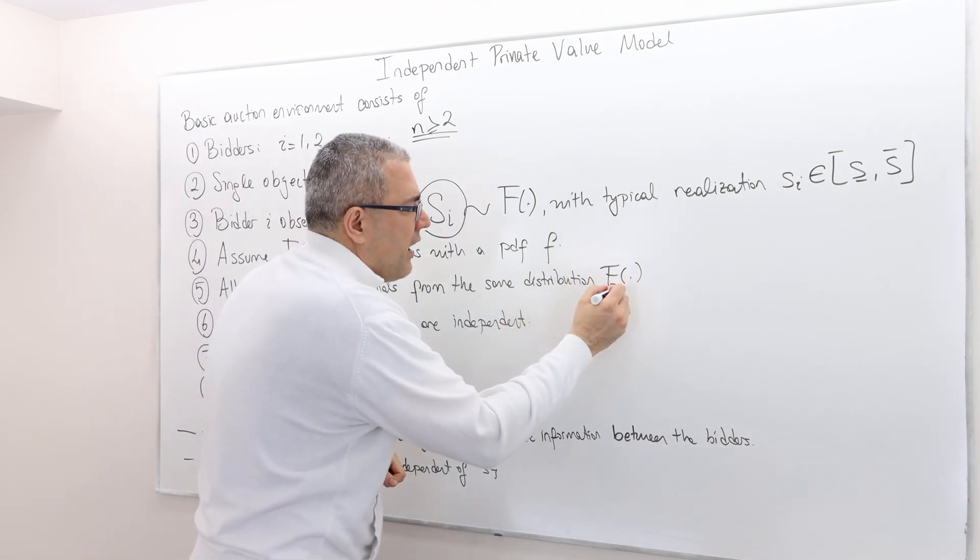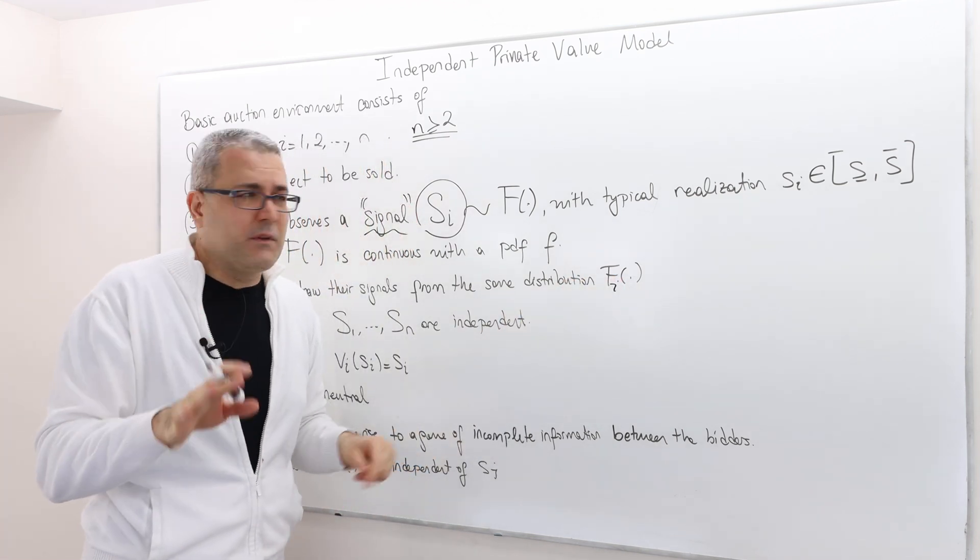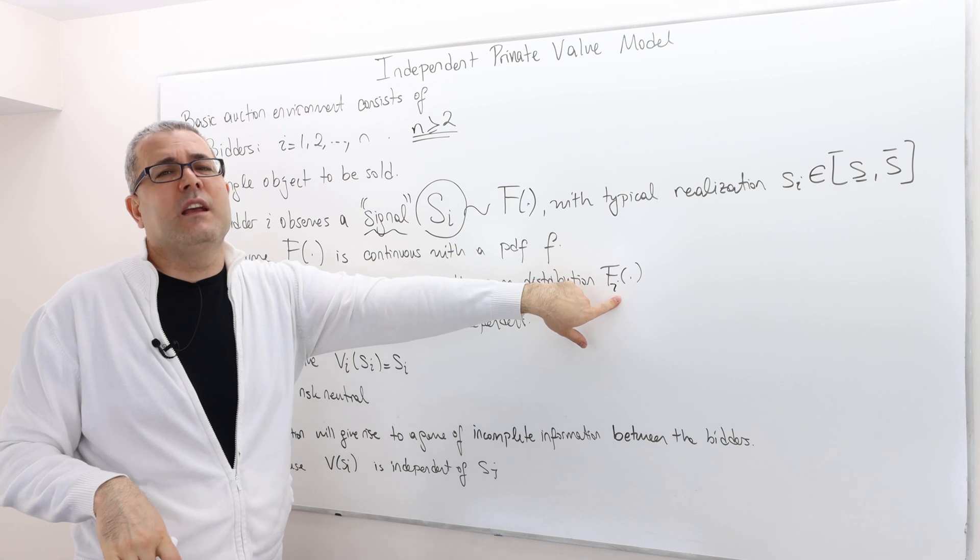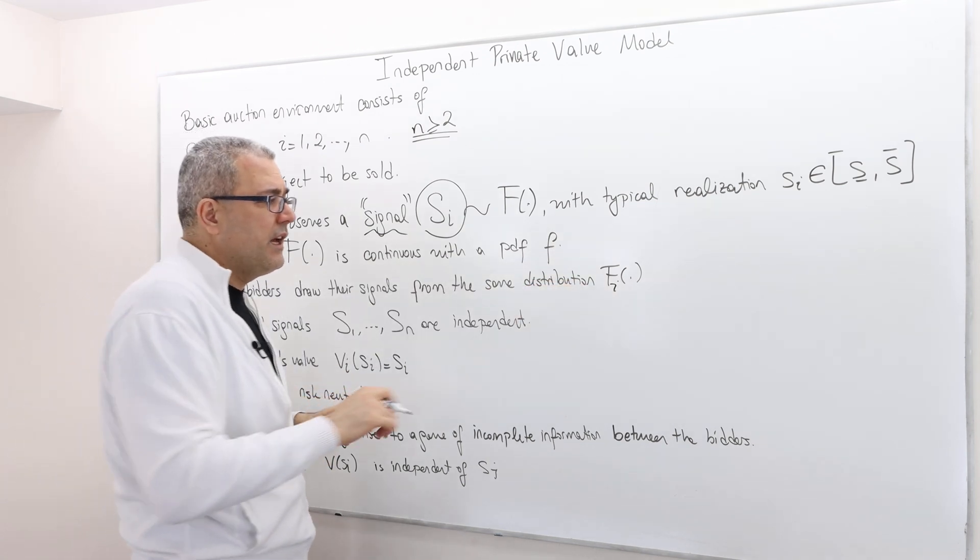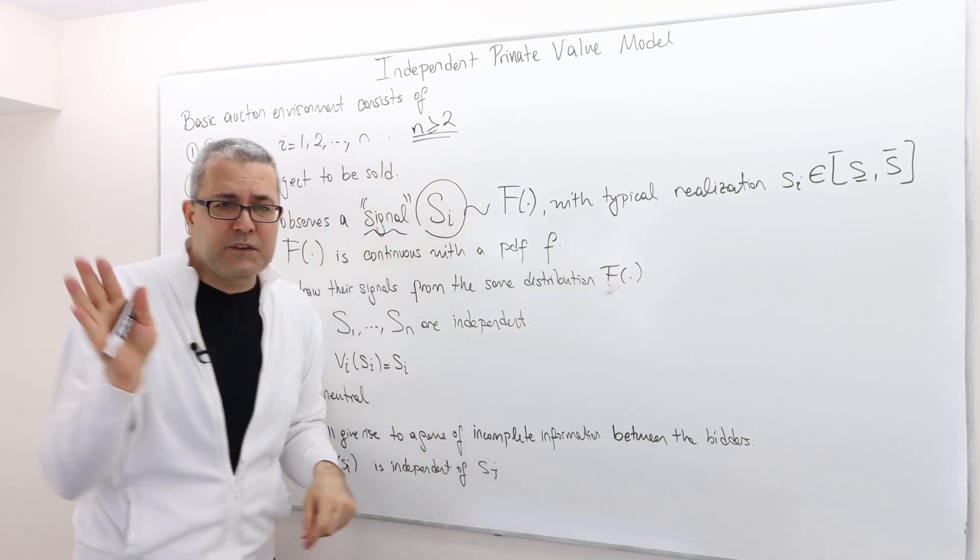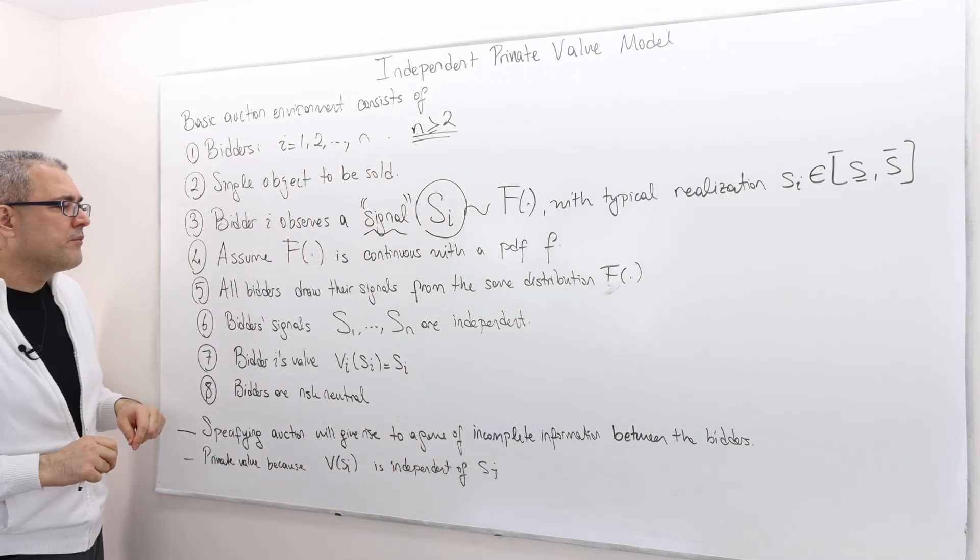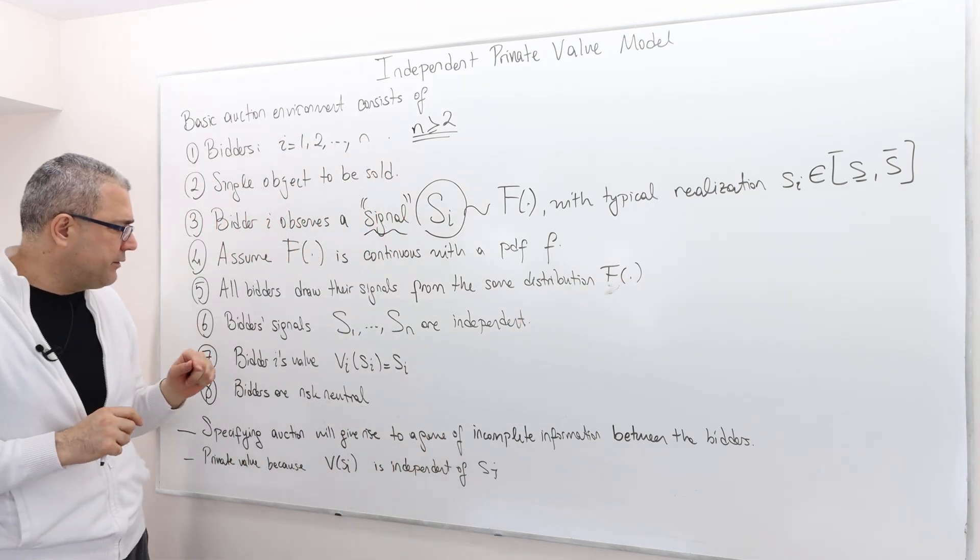So we don't really have to put this fi here. But putting a subscript i here is going to make a lot of things much more complicated later. And so for simplicity, assume that everybody draws the signals from the same distribution.